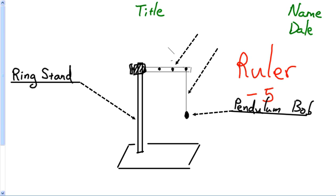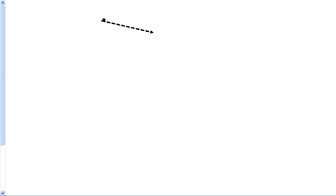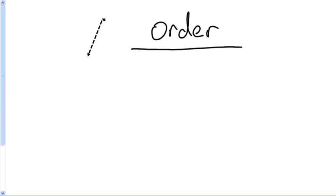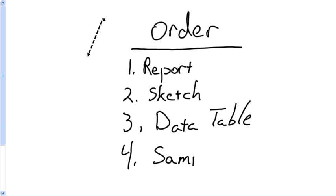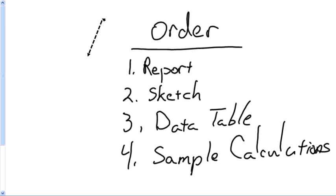That should be your report. When you are all finished, here is the order for the report: number one, the report itself — purpose and all that. Number two, the sketch page. Number three, the data table. And number four, the sample calculations. All right, that concludes this video. Thank you for watching another wonderful episode of Turd Fergavision. Remember America, I love you. We'll see you next time.